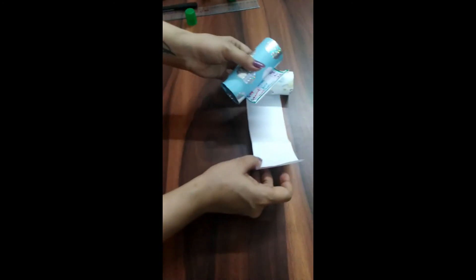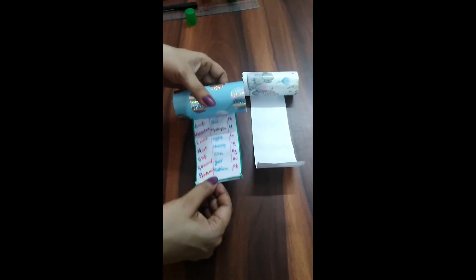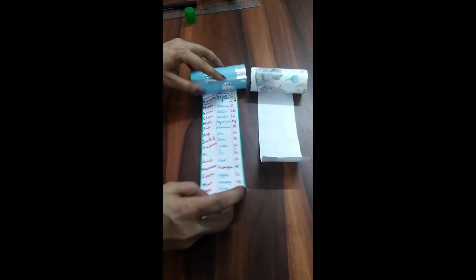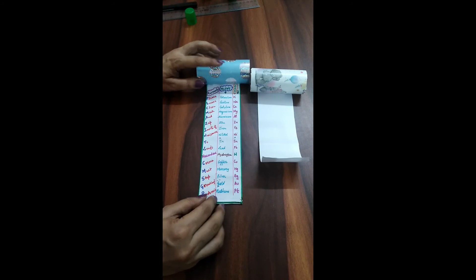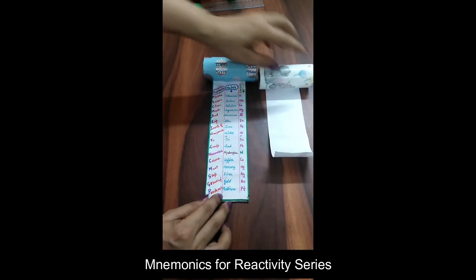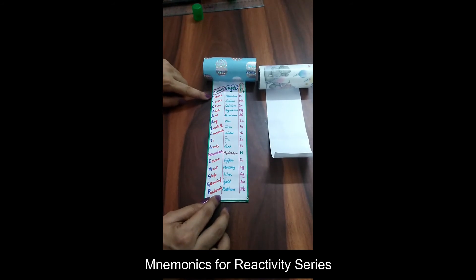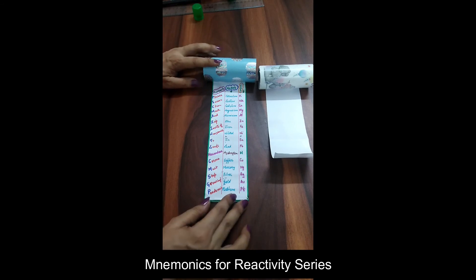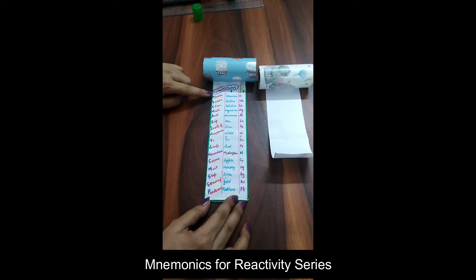Also you have number of mnemonics available on the Google, you can also make your own mnemonics to learn the reactivity series. And here I have taken: Please Secure Clean Mask And Zap And Write Off Nuisance To Lungs, Hazardous Corona Must Stop Growing Pandemic.